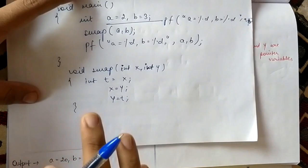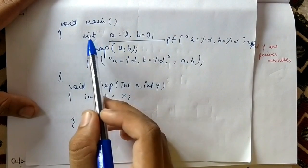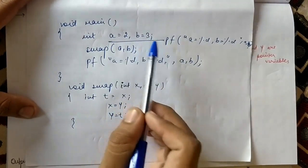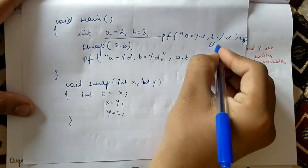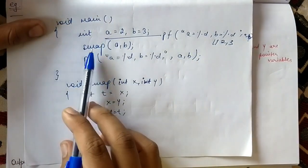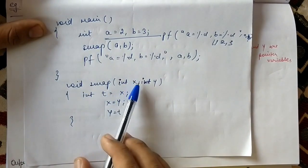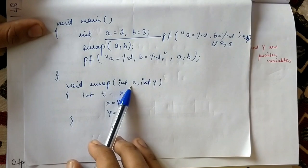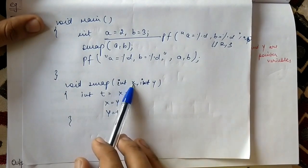For example, if we have a value of a and b as two and three, and we print the value of a and b initially, the output will simply be two and three. Then we send them to the swap function, and the values two and three are copied into the local variables x and y.